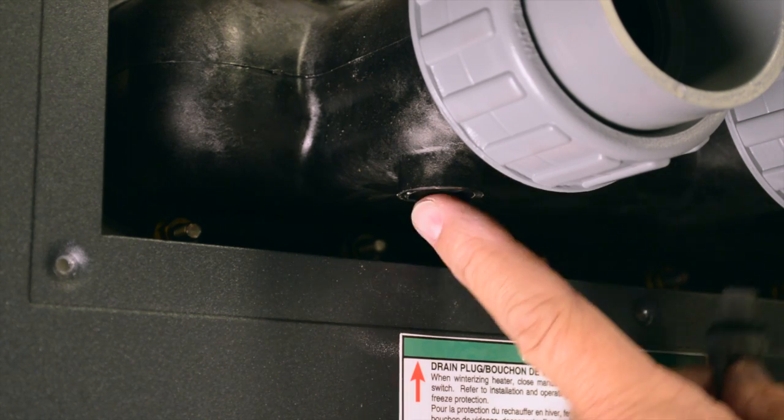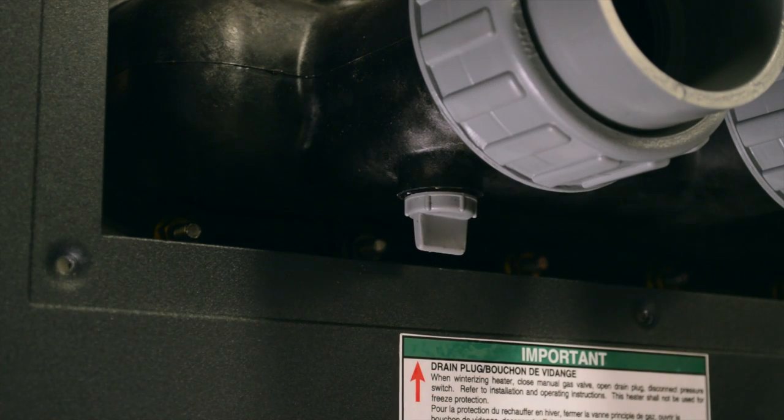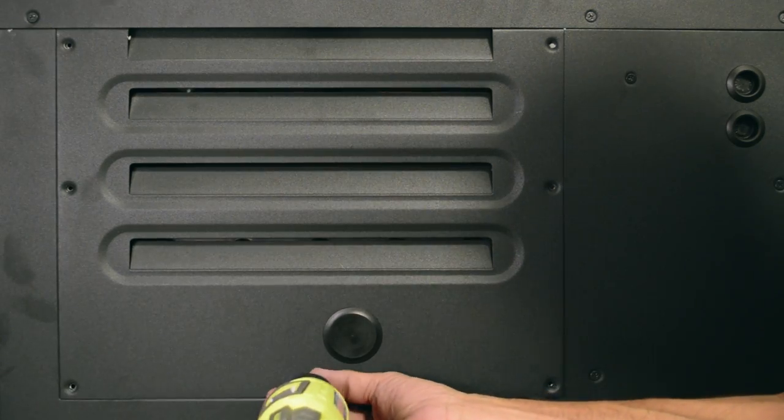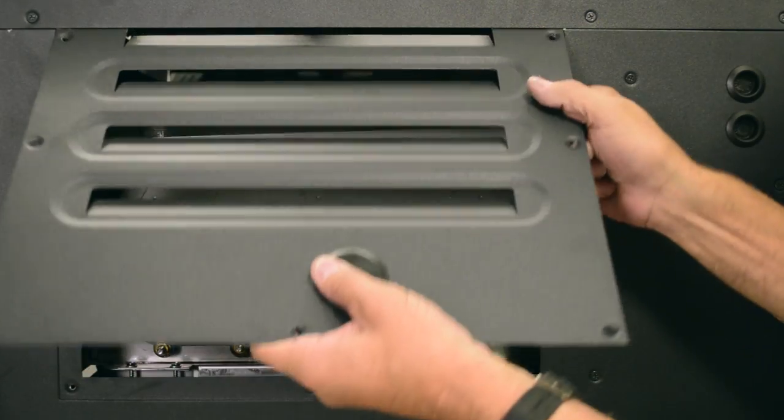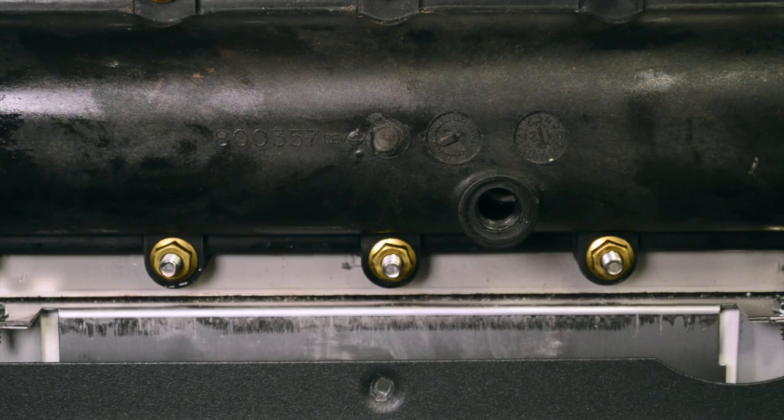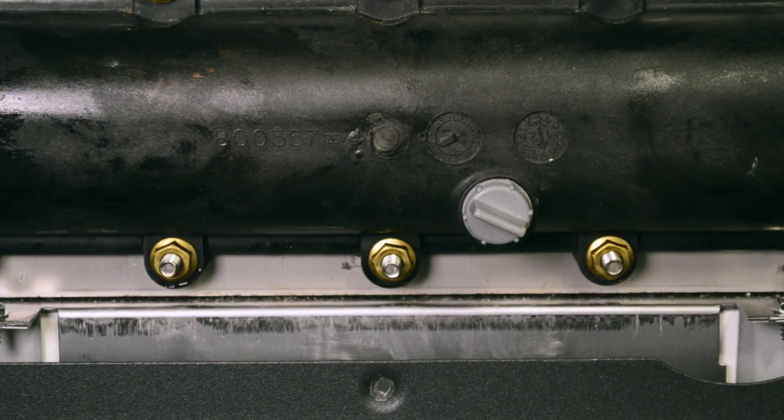Reinstall the drain plug into the bottom of the inlet-outlet header, finger-tight only. Remove the screws holding the access panel located on the return side of the heater. Reinstall the drain plug into the return header, finger-tight only.